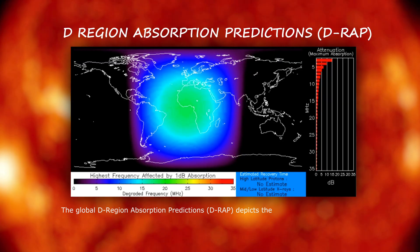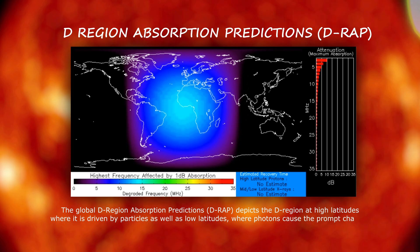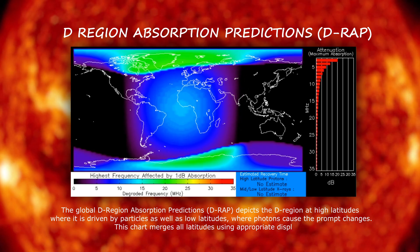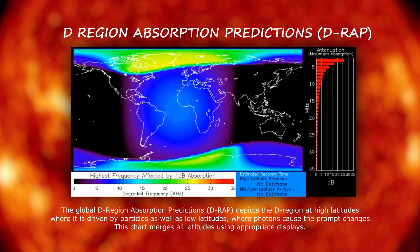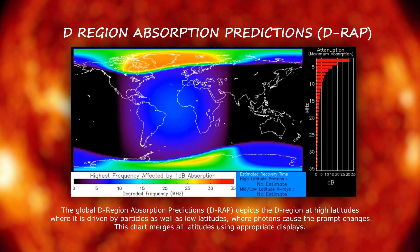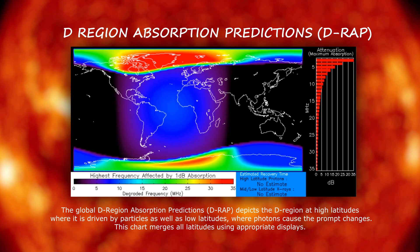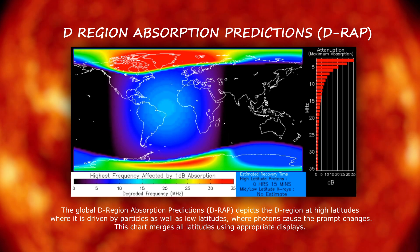After a flare, be sure to check out the D-layer absorption charts. This chart highlights the impact of the solar X-ray flux and SEP (solar energetic particle events) on HF radio communication.